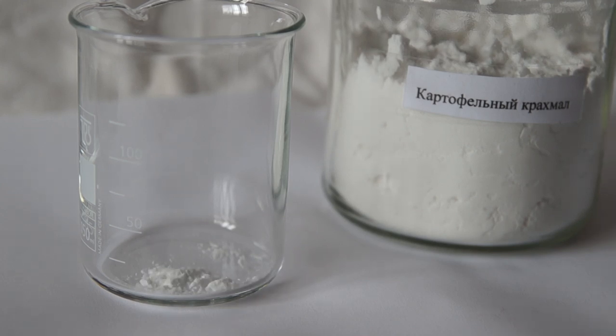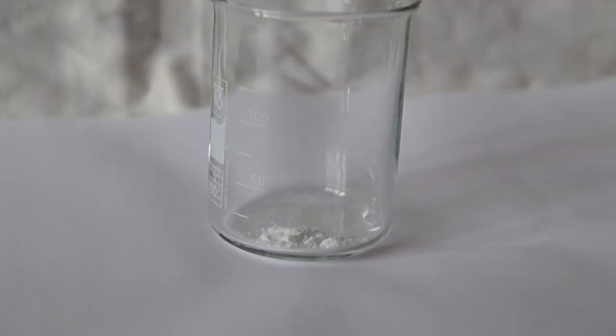Now we need to prepare the starch solution. To do this take a glass and add a little potato starch there. Fill it with cold water and stir it to dissolve the starch.